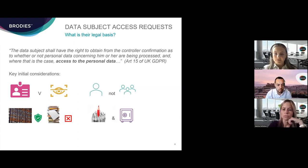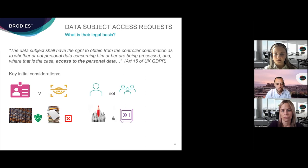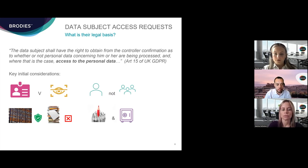What does that mean in practice? It's important to note that the right is only exercisable in respect of information about living individuals who can be identified within that information. Information about deceased persons is not caught by the UK data protection legislation, nor is truly anonymised information within scope. Truly anonymised information means it's no longer capable of being linked to an identified individual and so is no longer personal data.